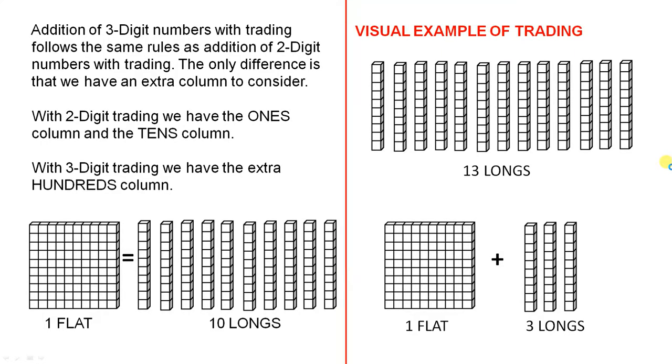Addition of three-digit numbers with trading follows the same rules as addition of two-digit numbers with trading. The only difference is that we have an extra column to consider. With two-digit trading we have the ones column and the tens column. With three-digit trading we have the extra hundreds column.